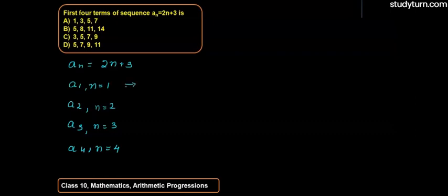Now, let us put the values in the given sequence. So if we put here n as 1, it will be first term, 2 plus 3, that will be 5. So first term is 5.